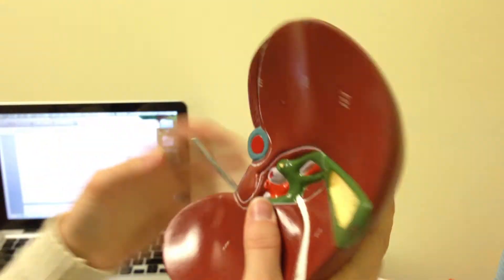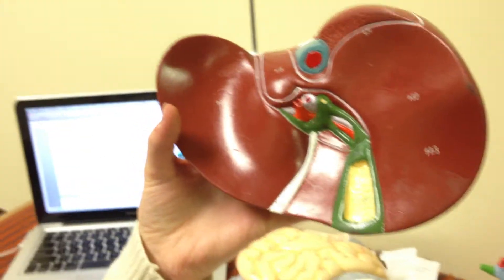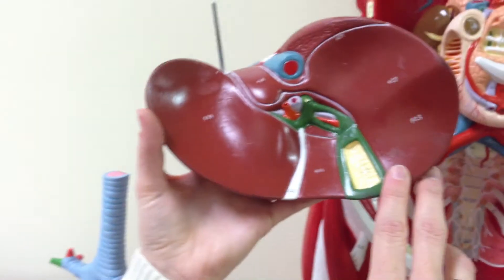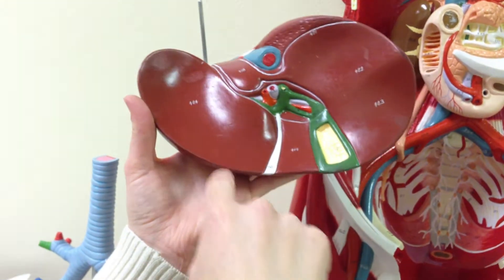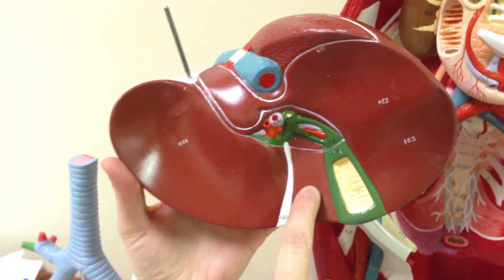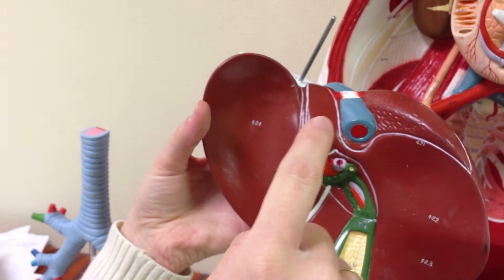Okay, go over the lobes of the liver. So the lobes of the liver you see here on the back. So you have the right lobe right here, the left lobe, and then you have the quadrate lobe, and then up here you have the caudate lobe.